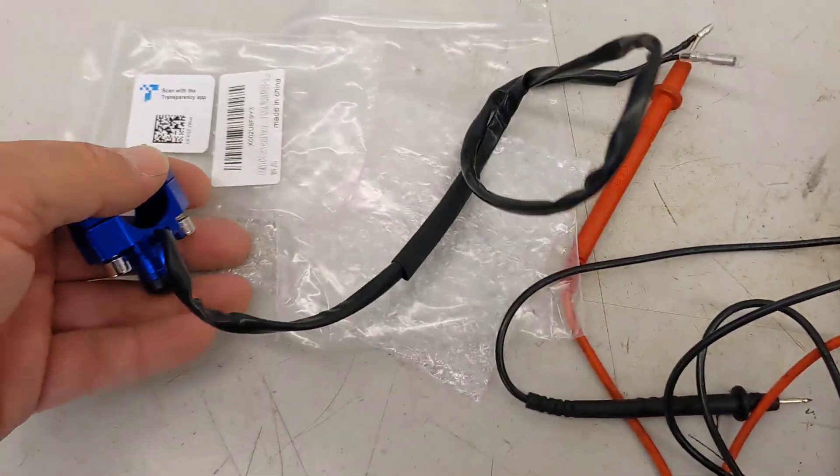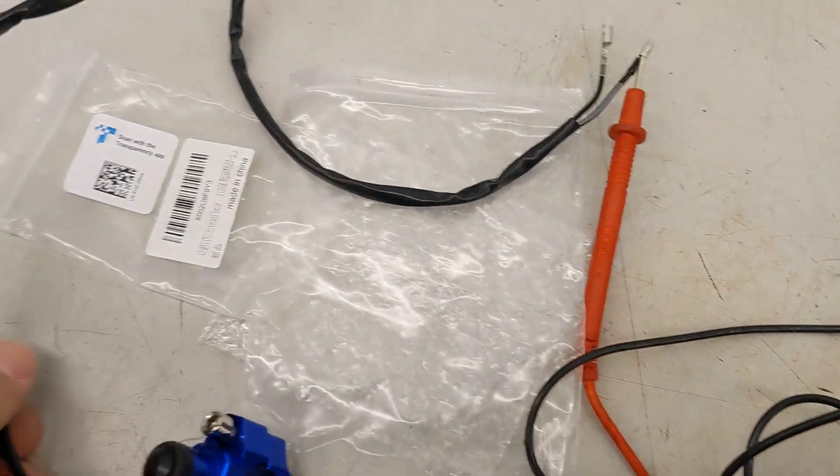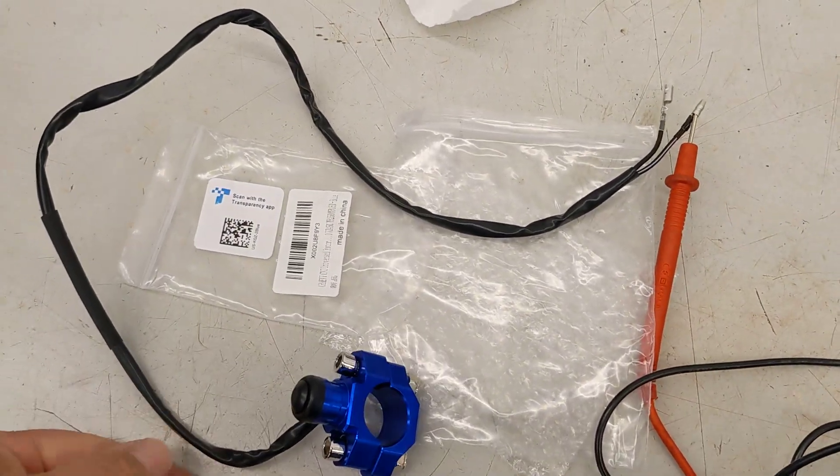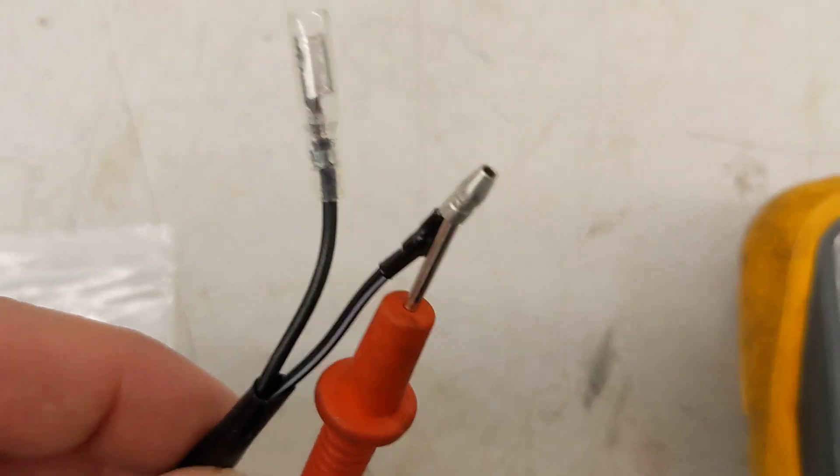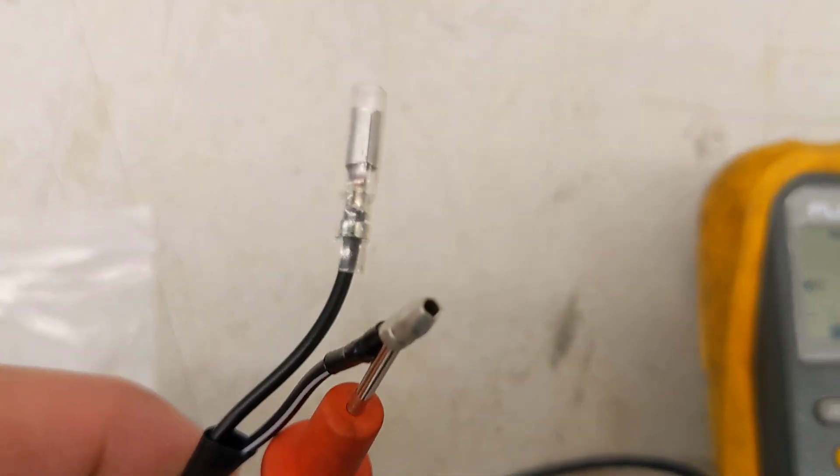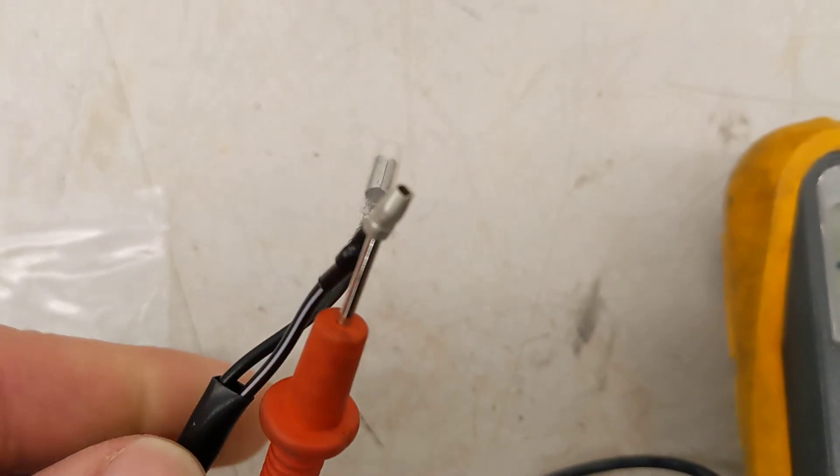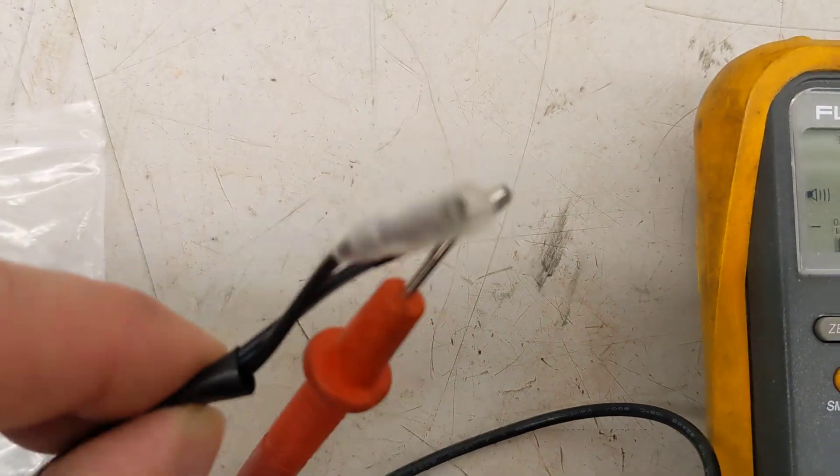But basically it has a long piece of wire, maybe 18 inches. And on the end of it, it has these bullet style connectors, which are typical on motorcycle wiring harnesses.